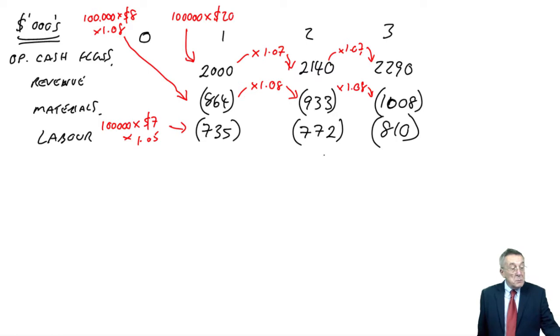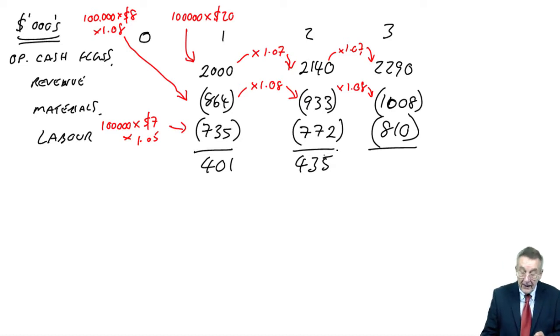Any other operating flows? It does say below, fixed overheads currently amount to a million. The accountant has decided 20% of these should be absorbed into the new product. Well, I hope I've dealt with this enough times. Absorbing simply means charging for profit purposes. We're only interested if fixed overheads were actually going to increase by doing the project. And there's no mention of the total increasing. Charge it any way we like. The total presumably stays the same. So fixed overheads are not relevant. And so the net operating flow each year, 2000 minus 864 minus 735. At time 1, it's 401. At time 2, 435. At time 3, 472.